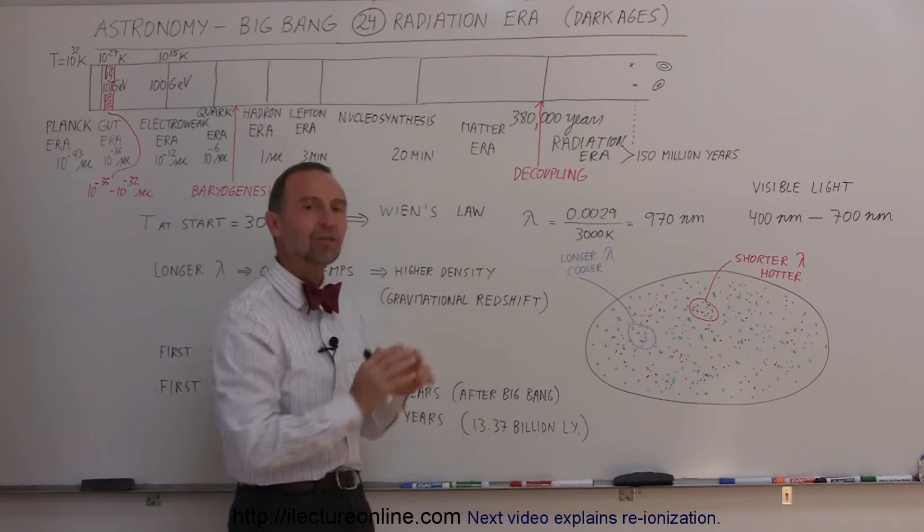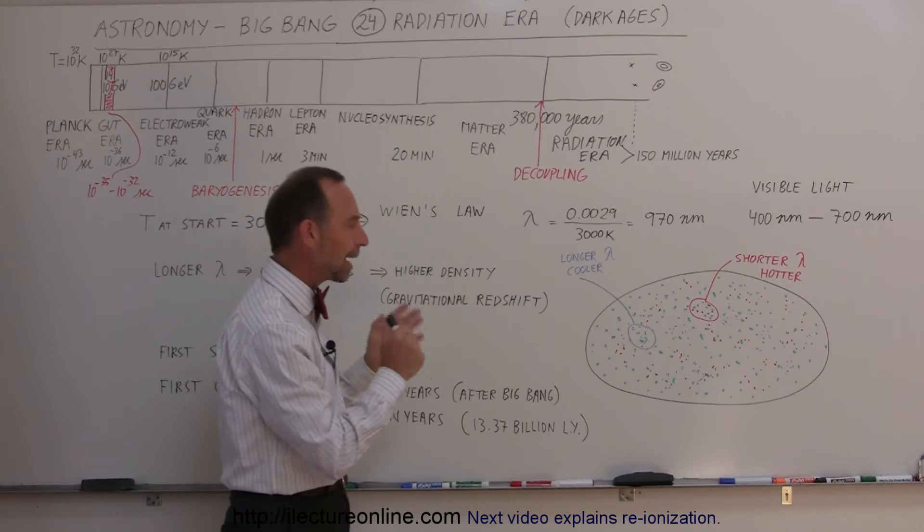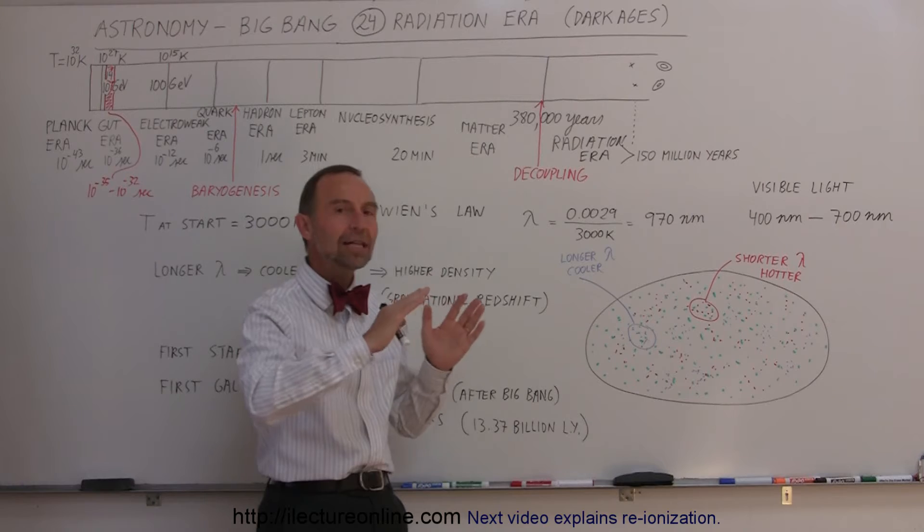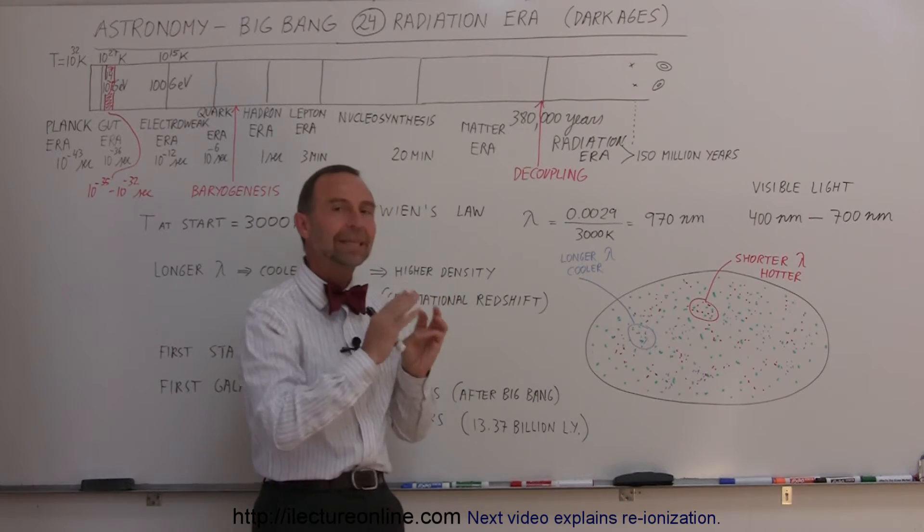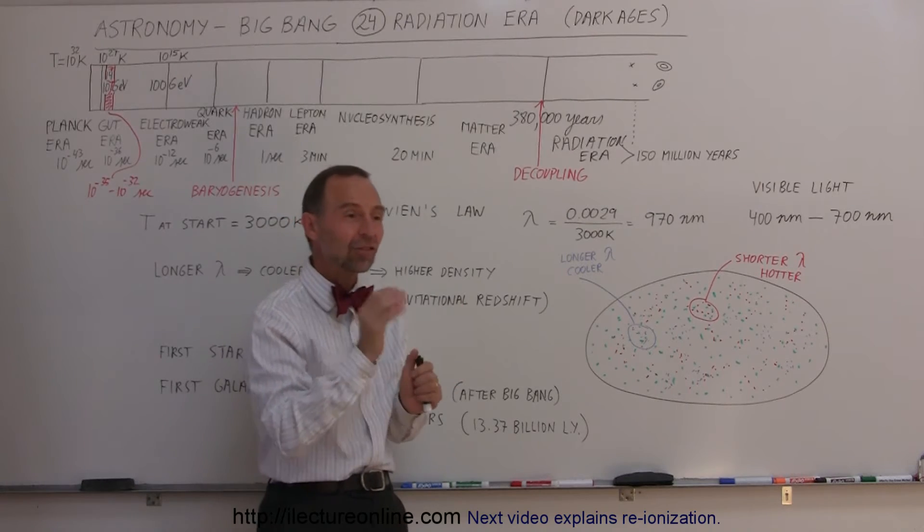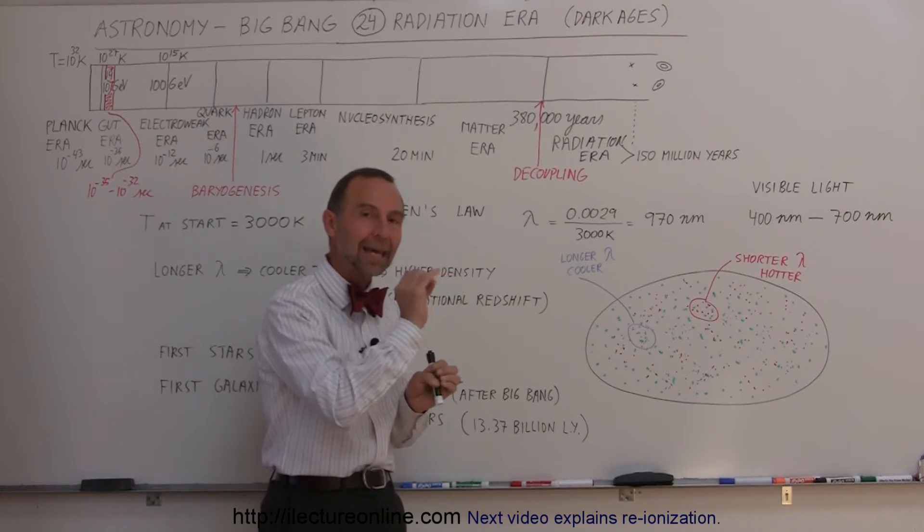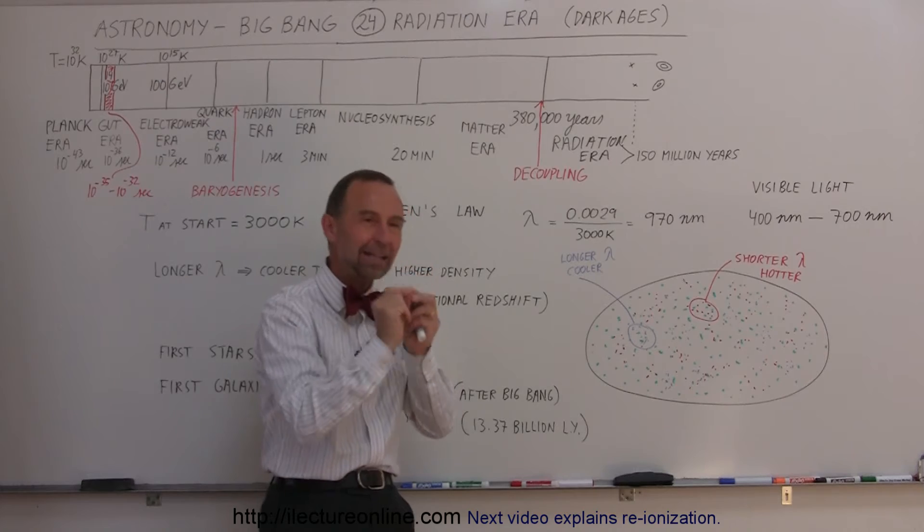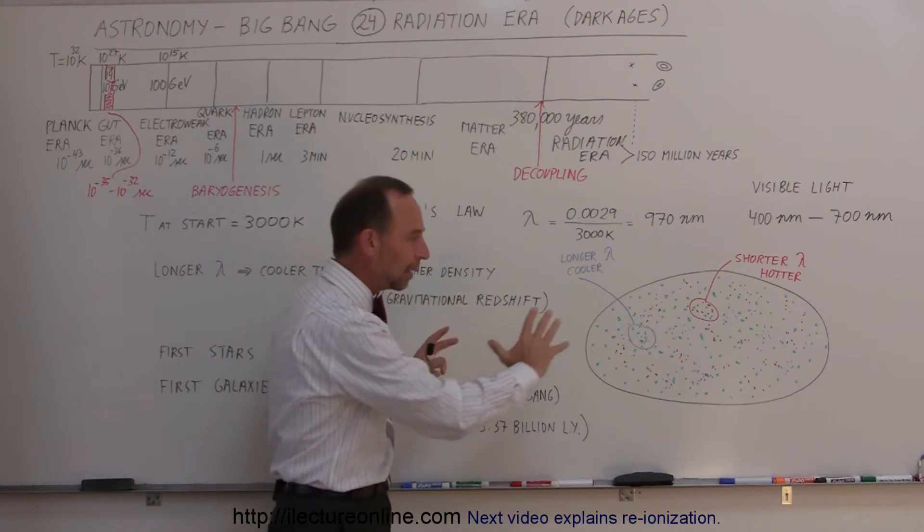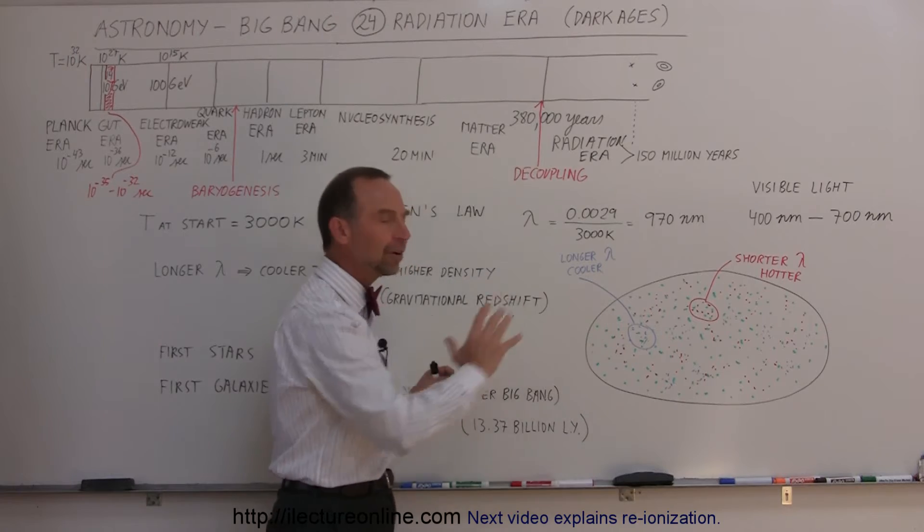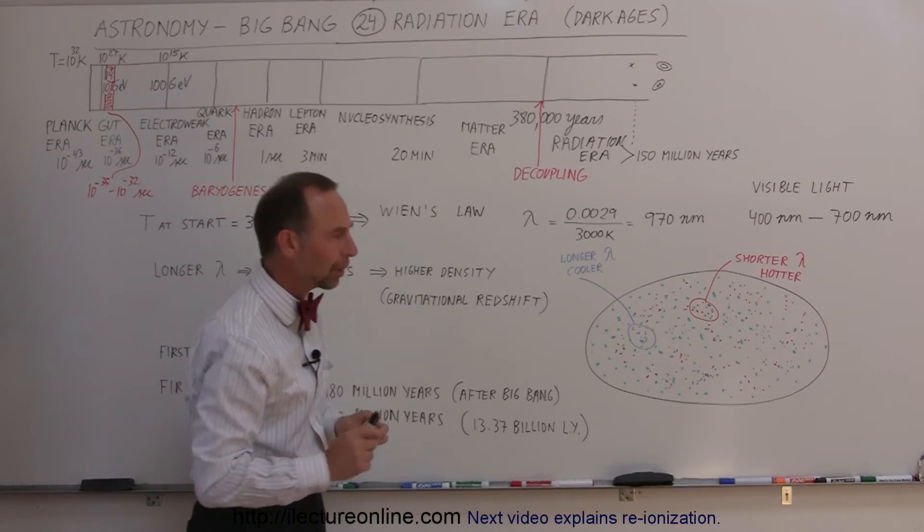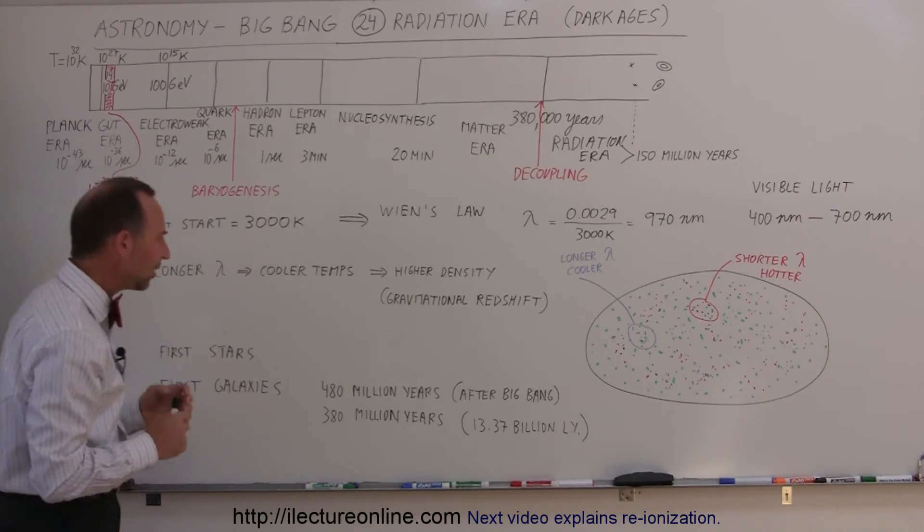By looking at careful measurements made by the COBE satellite of the background radiation, we realized the matter must have been distributed unevenly throughout the very beginning universe. We think these slight fluctuations came from the quantum mechanic level when the universe was still very tiny in the first fraction of a second, which became the slight variation in density as the universe unfolded after decoupling.